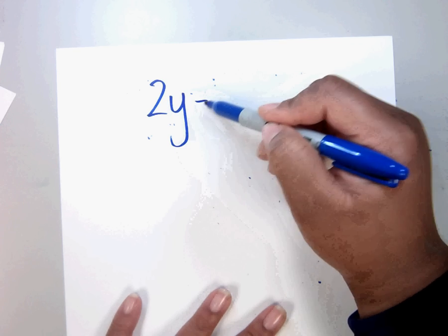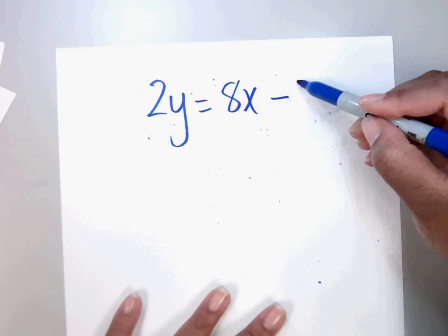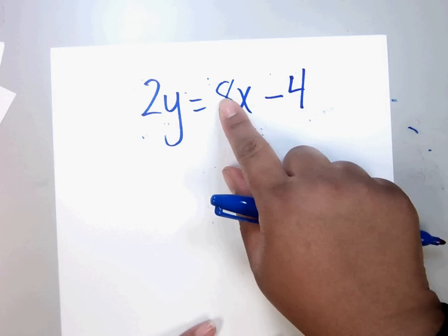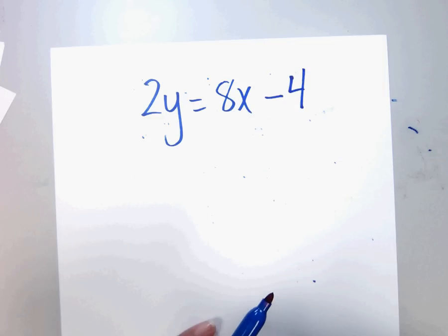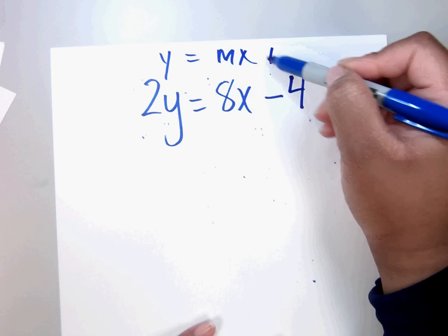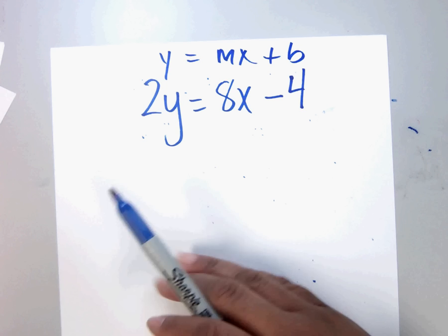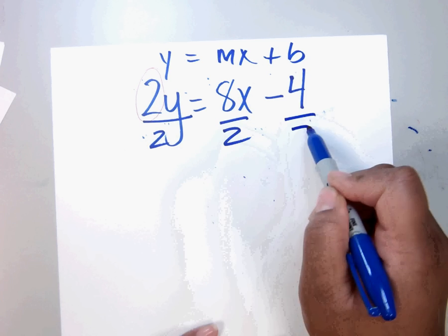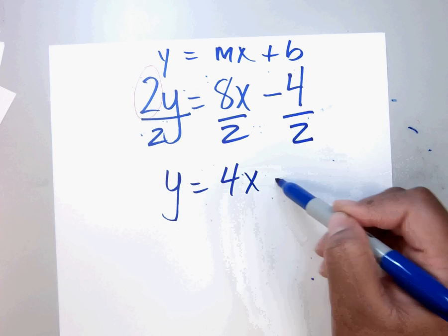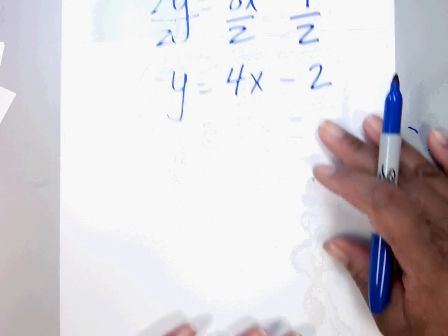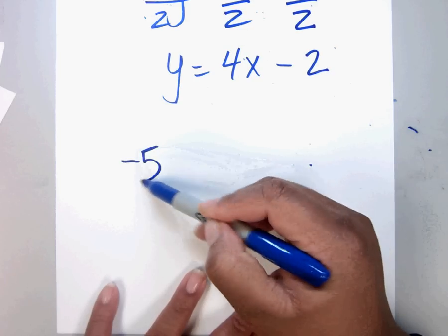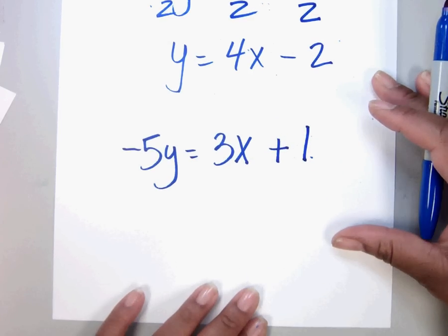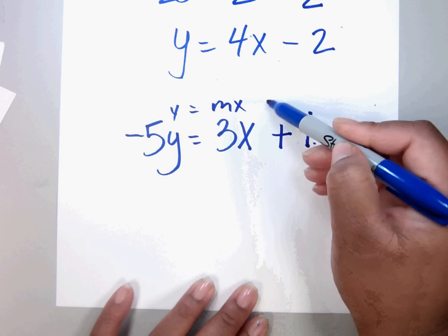Let's do this one: 2y equals 8x minus 4. Some of you want to still move the x because that's what we've done in the last few examples, but the x is already where it needs to be. If I write the target form above what I'm solving, I see everything is in its place except the 2. How do I get rid of it? You divide it off, and you're done.